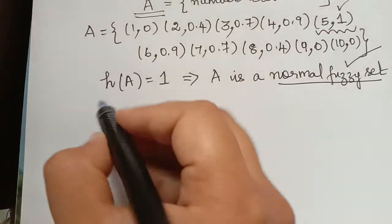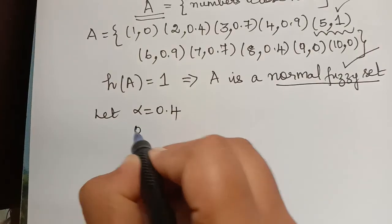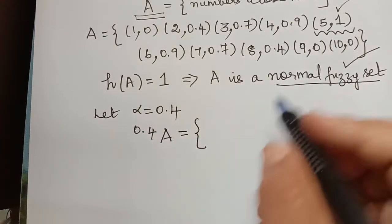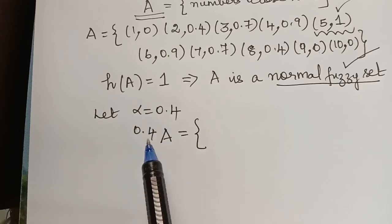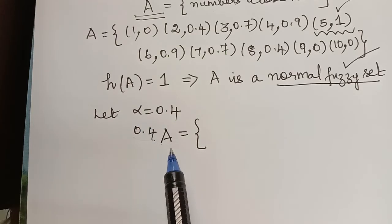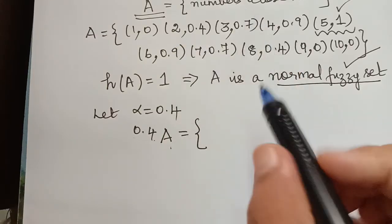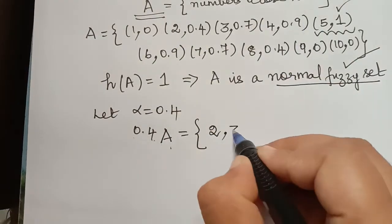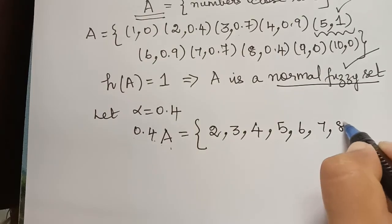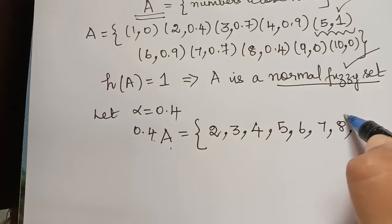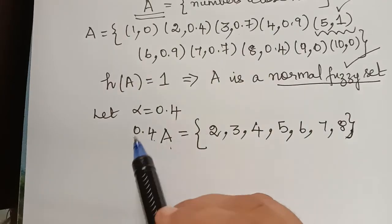Let me choose alpha equal to 0.4. The 0.4-cut of the fuzzy set A will be all those elements whose membership function is greater than or equal to 0.4. Element 1 has membership 0, so it is not included. Element 2 has membership 0.4, so it is included. Elements 3, 4, 5, 6, 7, and 8 are also included. Elements 9 and 10 are not elements of the 0.4-cut set of A.